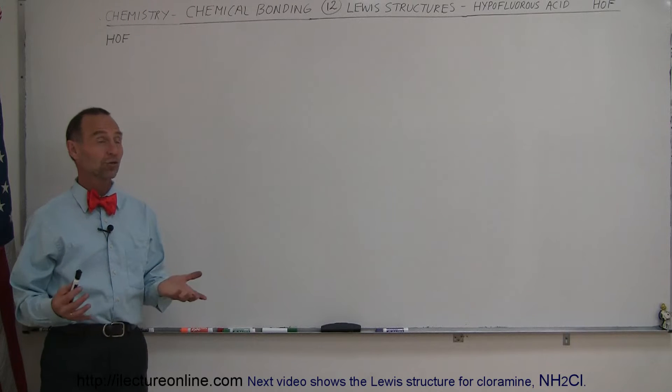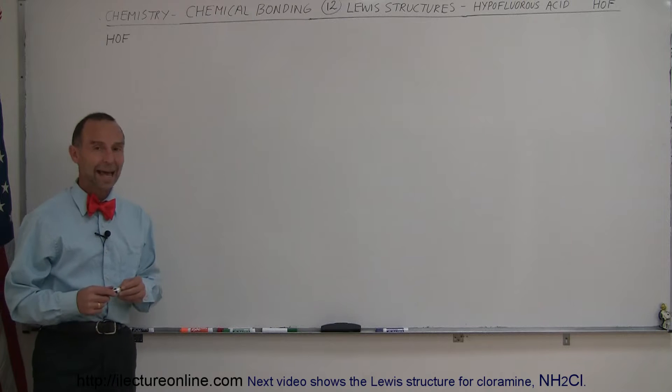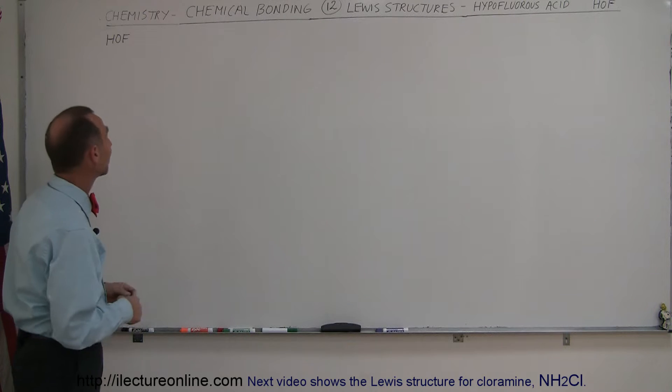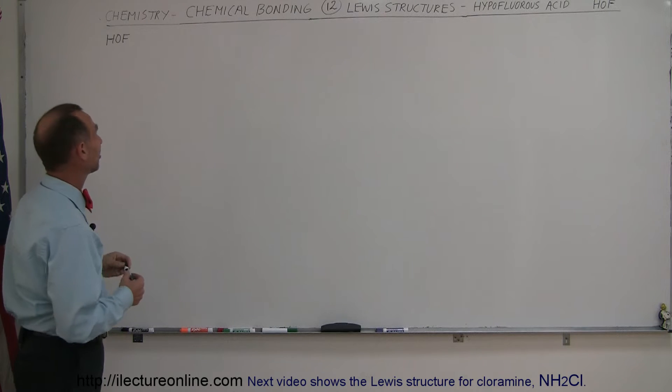Here's our next example of how to draw Lewis structures. In this case, we're going to look at something called hypofluorous acid. It's an acid because it can dissociate the hydrogen and place that in the water. But anyway, all we're interested in here is trying to find how to draw that.